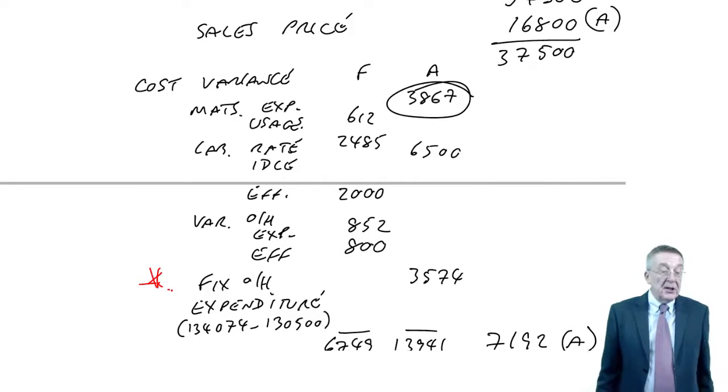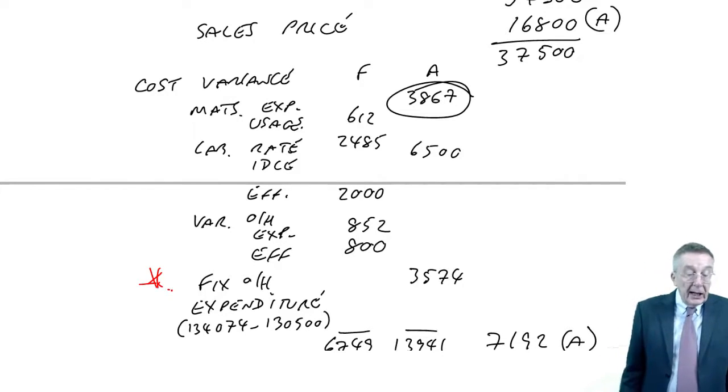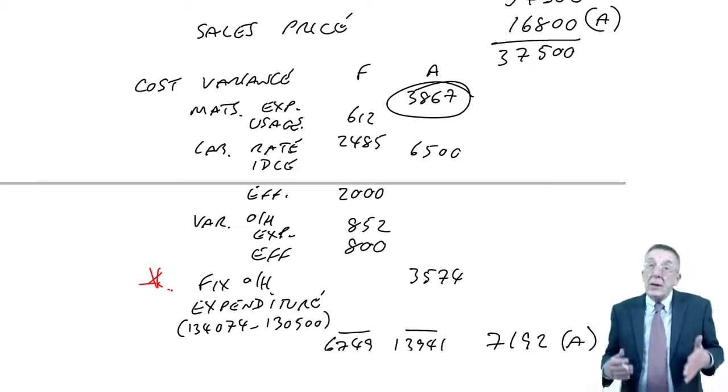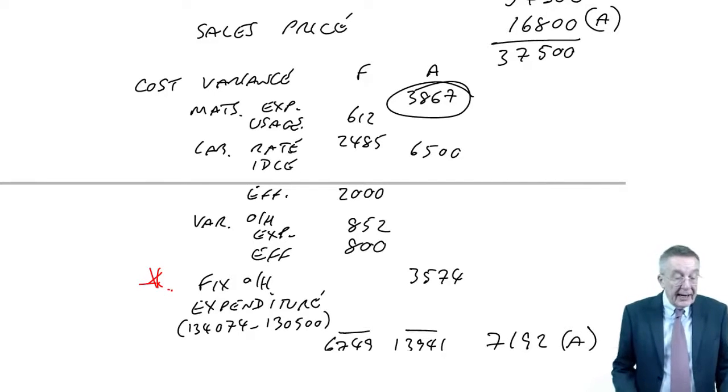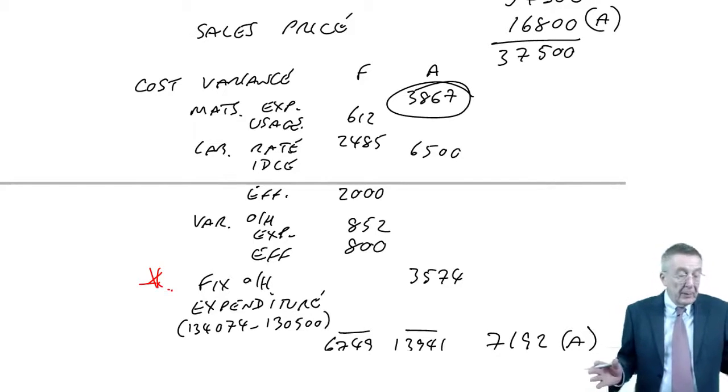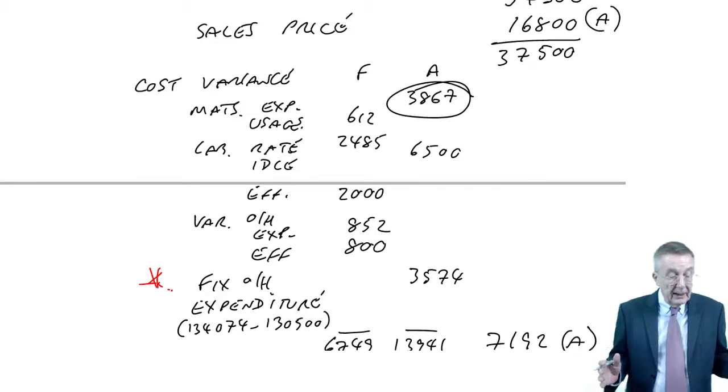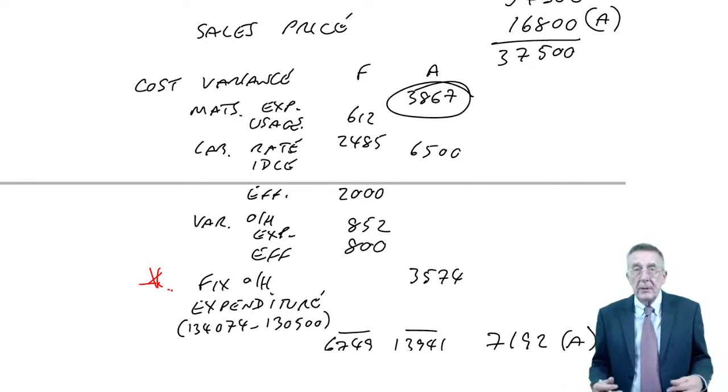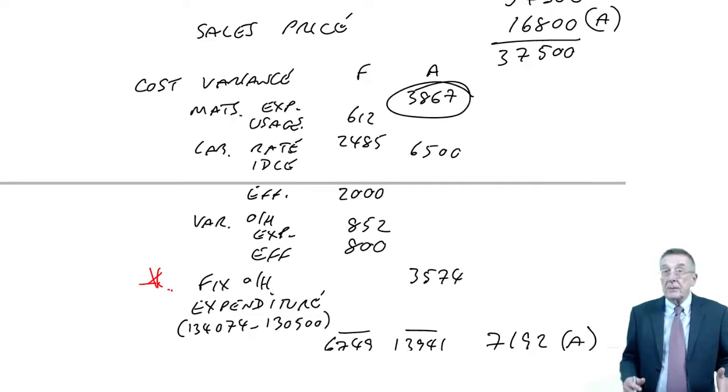If you look on the next page, example two asked us to analyze and produce an operating statement, we did that. Example three asked us to do it all again using marginal costing. The last one, which is what I want to talk about here, is the interpretation of variances.